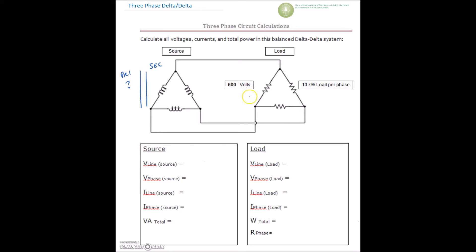I've given you a voltage here, and I've tried to trip you up — I've given you a 10 kilowatt load per phase. This voltage is on the outside, from here to here. If it's external to the loads, then this value is our line voltage. So we can drop in 600 volts on the line — it's 600 volts from the secondary of the transformer, feeding that three-phase resistive load.